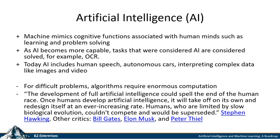Our next topic is artificial intelligence — this is where a machine mimics cognitive functions that humans would do. As AI gets better, some things that used to be considered AI, like optical character recognition, are now considered solved and reliable. If you look at the reliability of receipts when run through apps like Receipt Bank, it's absolutely amazing — the only thing that gives them a problem is when a human writes the tip or final amount illegibly. AI includes human speech, autonomous cars, interpreting complex data, and other capabilities.